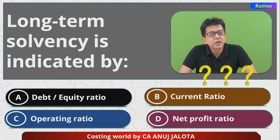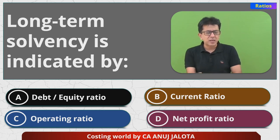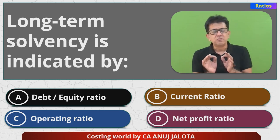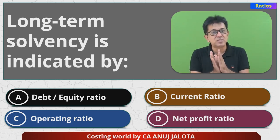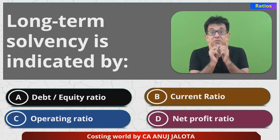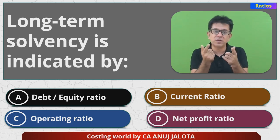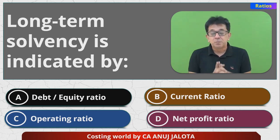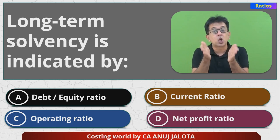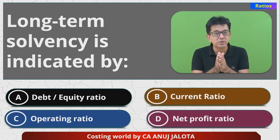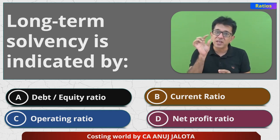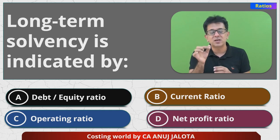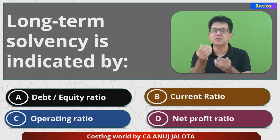Now let's think of the answers. Long-term solvency — what does that mean? It means that in the long term, will your business survive? Your business will survive if you have enough funds to discharge your liabilities — but long-term liabilities. B is current ratio, which is a short-term solvency ratio. It only speaks about the short term: whether you have enough current assets to discharge your current liabilities. That is why it is current assets upon current liabilities.